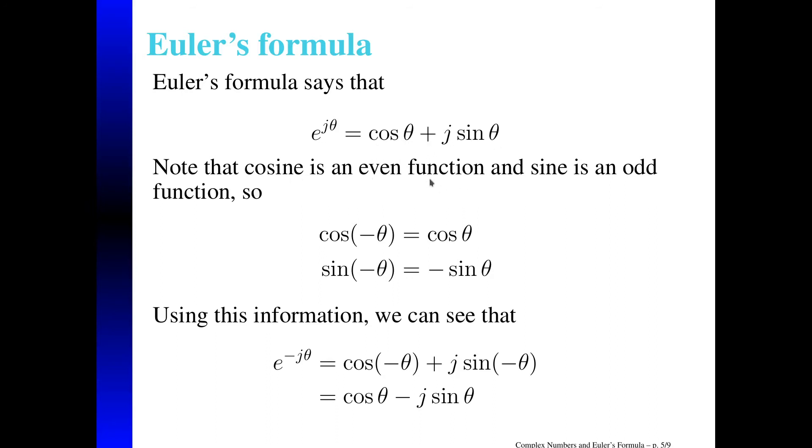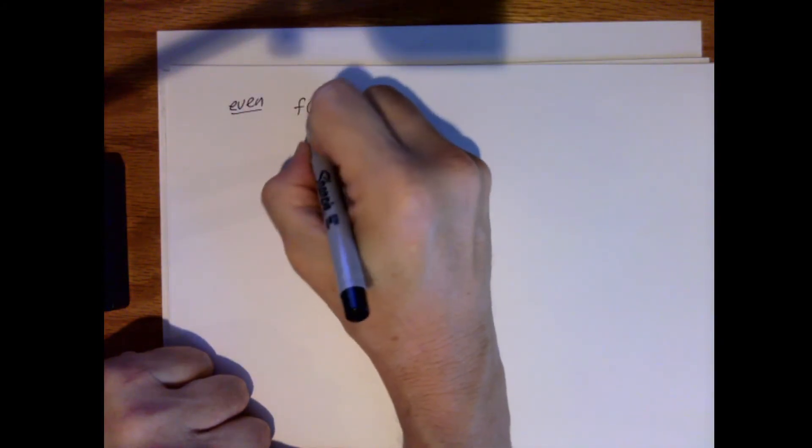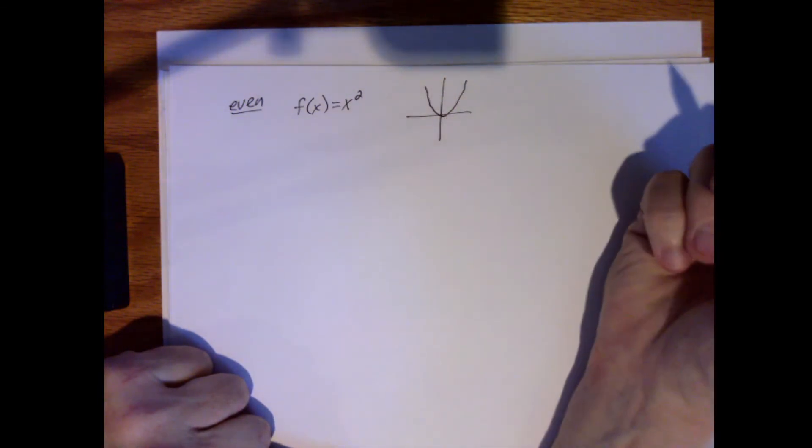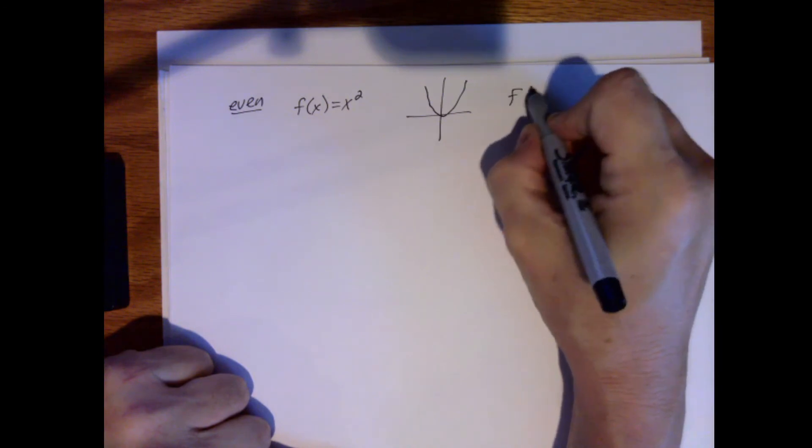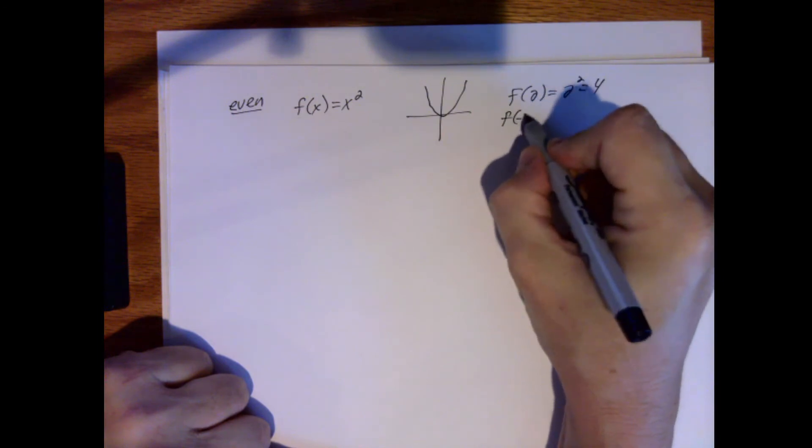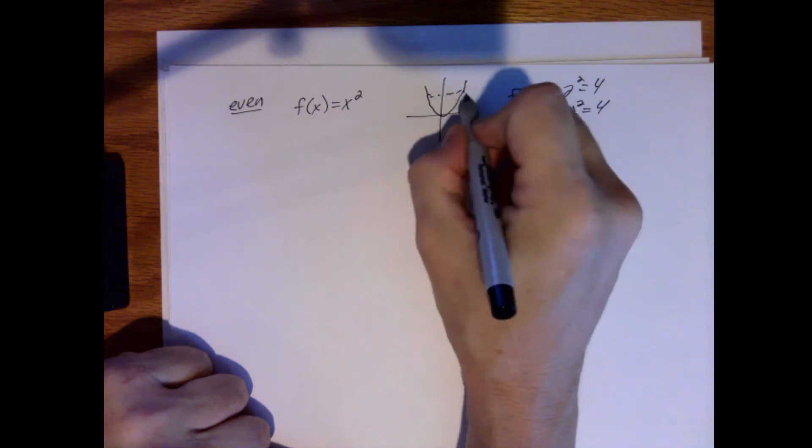Now note that cosine is what we call an even function, and sine is an odd function, which ultimately means that cosine of minus theta is equal to cosine of theta, and sine of minus theta is equal to minus sine of theta. Let's see another example to see what I'm saying here. So one of the most common examples for an even function would be F of X is equal to X squared. So when I plot that, I get something that looks like this, and that says that F of 2 is equal to 2 squared is equal to 4, and F of minus 2 is equal to minus 2 squared, which is still equal to 4. They have the same Y value.